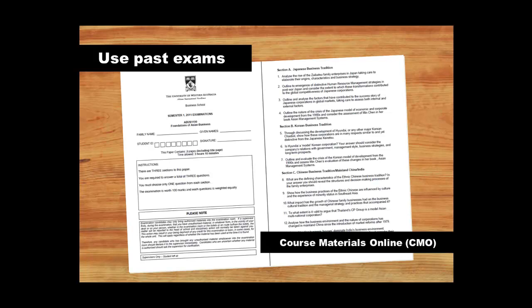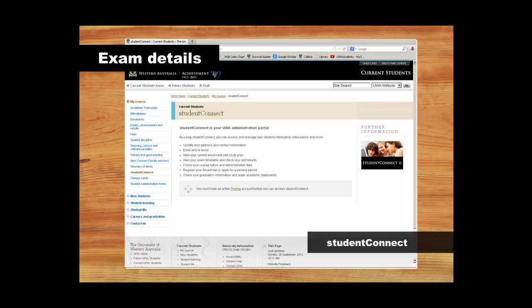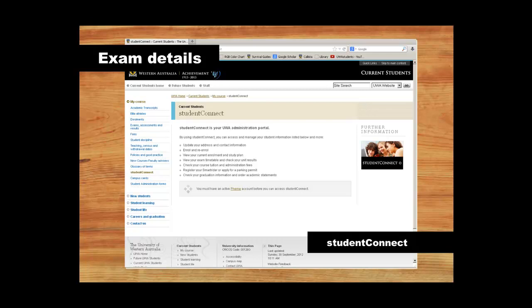To find out the details of when and where your exams will take place, go to Student Connect. Your personalized exam timetable will be published here around four weeks before the end of semester. You can also find general information about the exam periods, rules, grades and alternative exam arrangements.